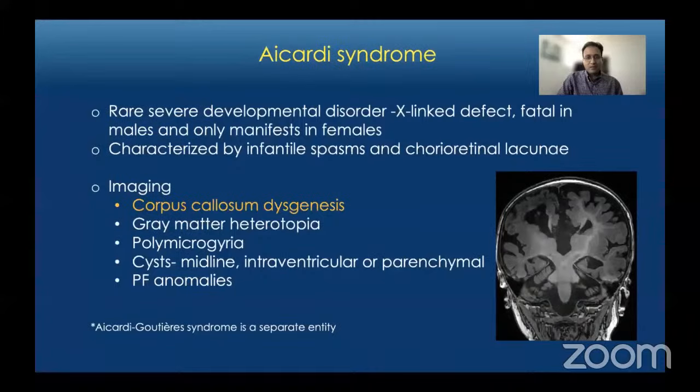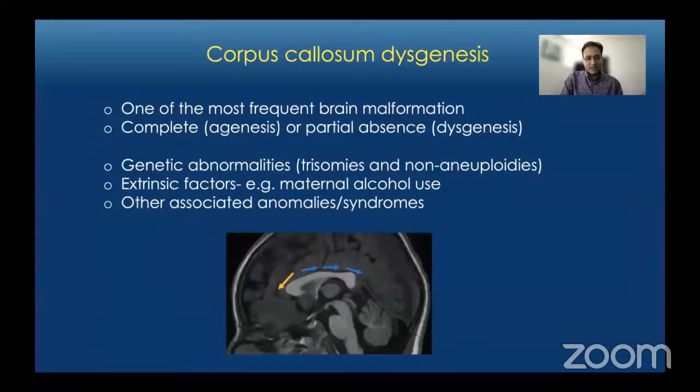A few words about corpus callosum dysgenesis: it is one of the most frequent brain malformations. It can be complete absence, called agenesis, or partial absence known as dysgenesis. It is often associated with genetic abnormalities including trisomies, single gene mutations, or extrinsic factors like maternal alcohol syndrome. Corpus callosum dysgenesis is often associated with other intracranial, spinal, and craniofacial anomalies, and many have syndromic associations.